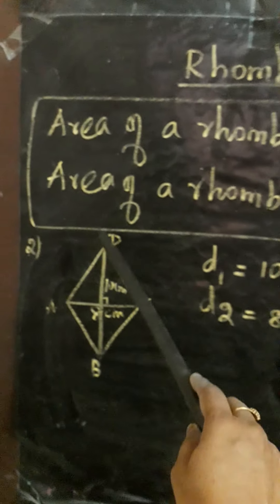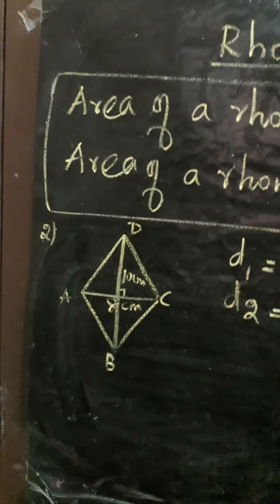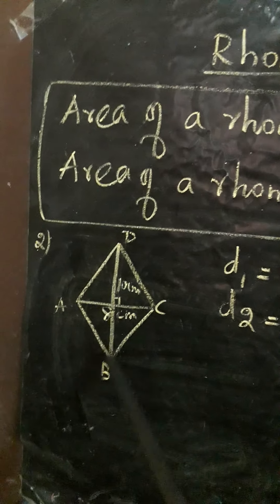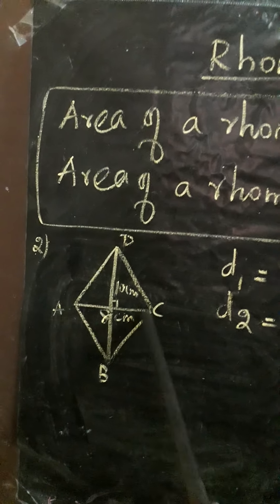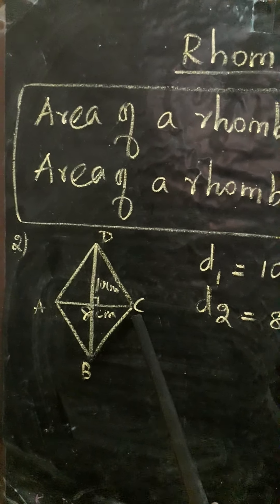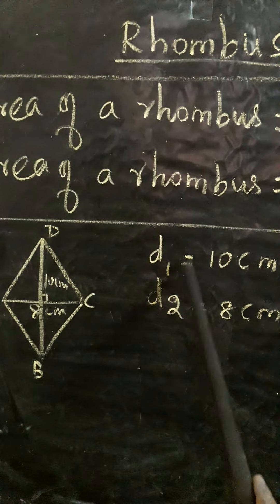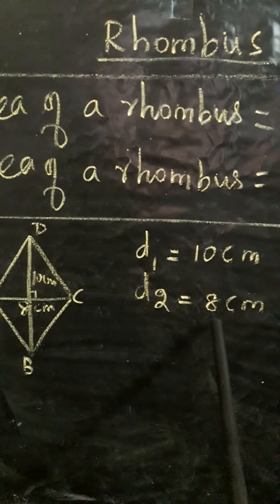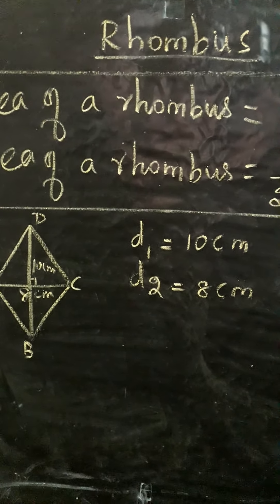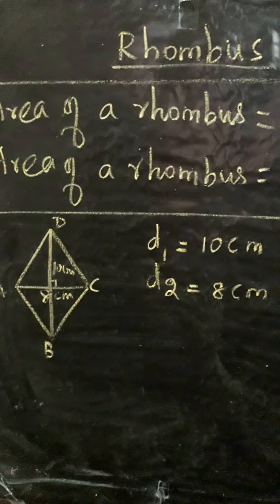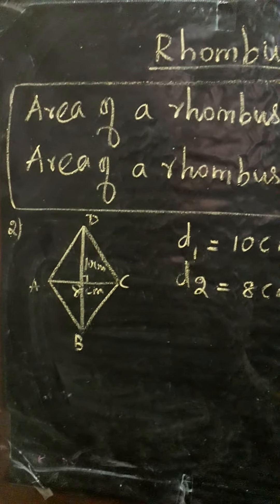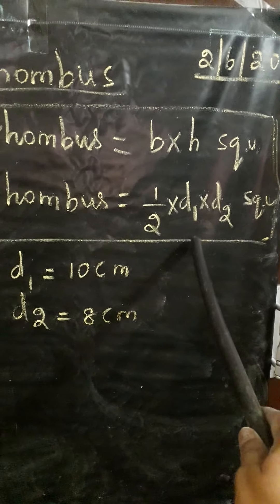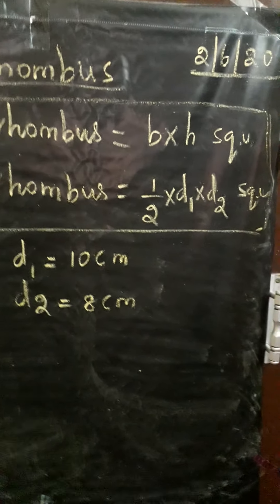Second sum. Here rhombus ABCD is given. Two diagonals are given — one diagonal is 10 centimetres and another diagonal is 8 centimetres. So firstly, write diagonal 1: D1 equals 10 centimetres. Diagonal 2: D2 equals 8 centimetres. Since D1 and D2 are given, we should use the second formula — area of rhombus equals half into D1 into D2 square units.